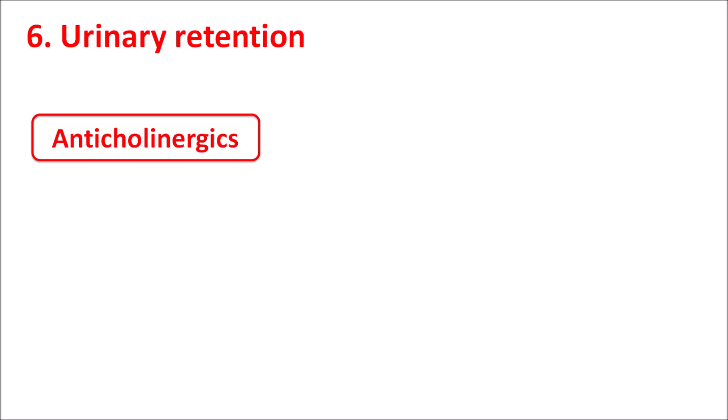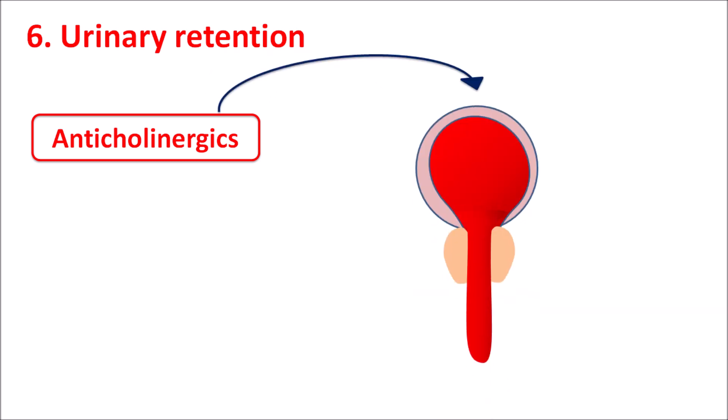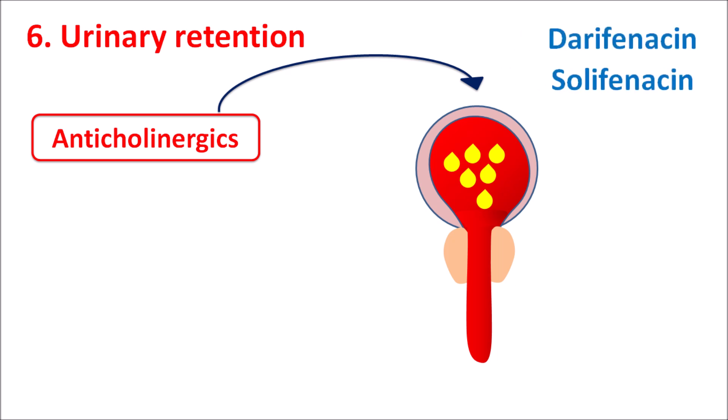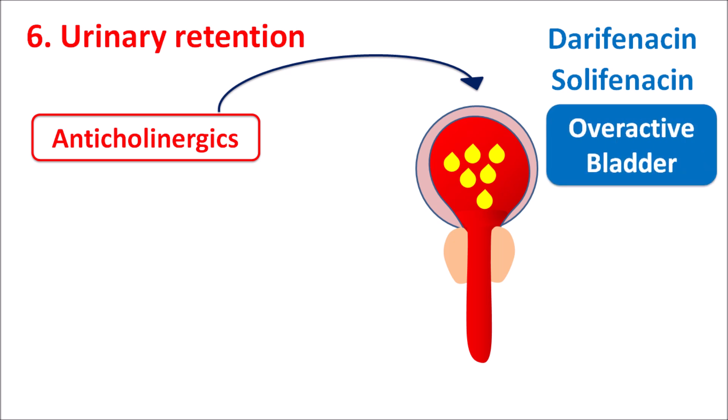The sixth side effect is urinary retention. Since anticholinergics relax smooth muscle, they also relax the bladder, resulting in decreased urinary output. While this is therapeutically useful — drugs like darifenacin and solifenacin are indicated for overactive bladder — anticholinergics can also cause difficulty in micturition and urinary retention.